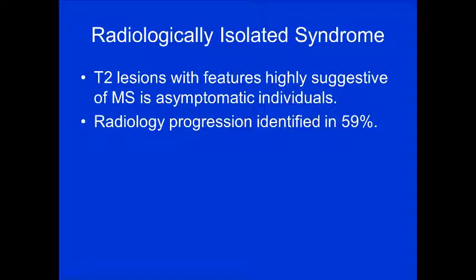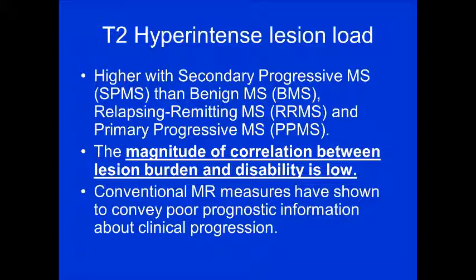Radiologically isolated syndrome: T2 lesions with features highly suggestive of MS in a patient who is completely asymptomatic. They come in with no symptoms, have characteristic lesions in characteristic locations, but are asymptomatic. It's important to convey this to the neurologist or ordering physician because progression occurs in about 60% of these patients. The T2 hyperintense lesion load is higher in secondary progressive MS than in benign, relapsing-remitting, or even primary progressive MS. However, the correlation between lesion count and disability is low.